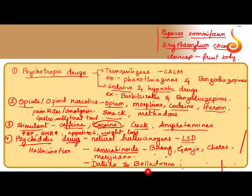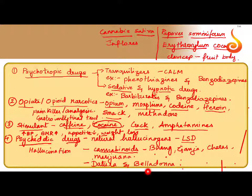Another very important drug is cannabinoids — again a one-marker question. Cannabinoids are extracted from the Cannabis sativa plant, and the inflorescence of this plant is the part that is used. All of these psychedelic drugs cause hallucination, making you feel like you are in a completely different world where nothing can happen to you. These are the main types of drugs we have discussed.